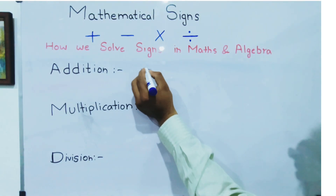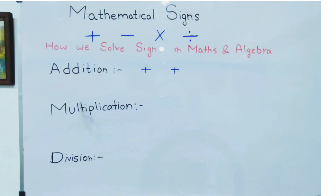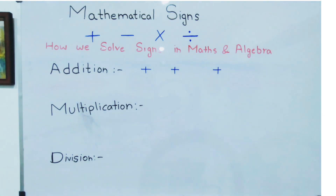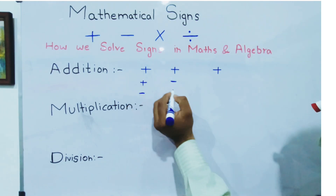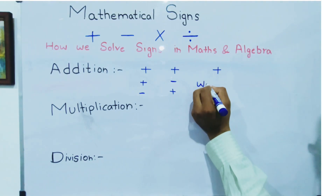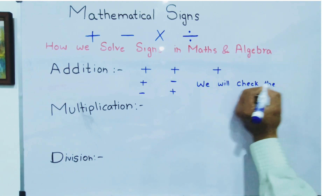For example, if we have values with the same sign — like if both signs are positive — then the answer will surely be positive. But if we have values with different signs, like addition and subtraction or subtraction and addition, then we will look at the greater value. The sign of the greater value determines the sign of the answer.